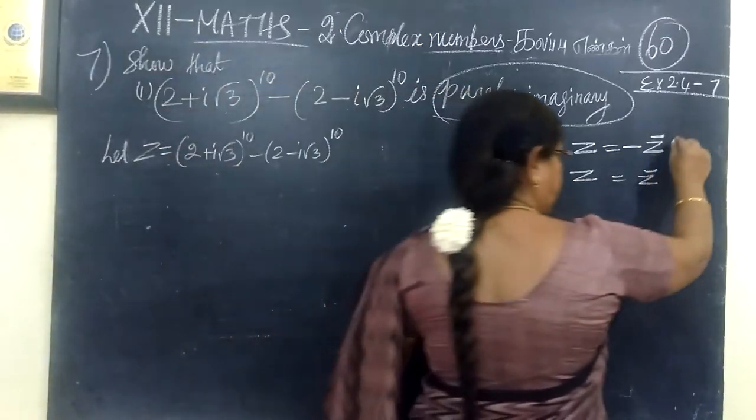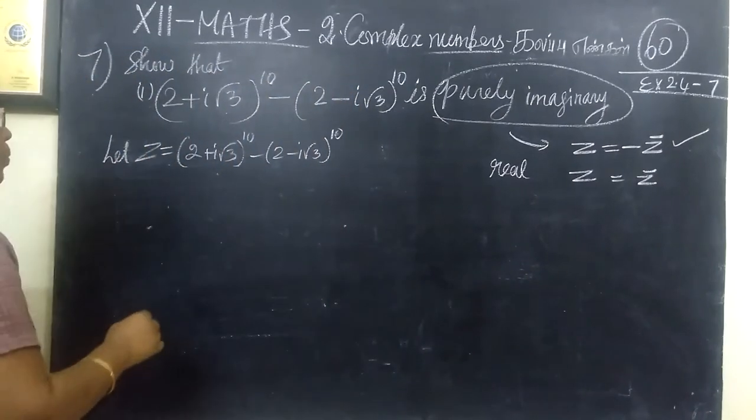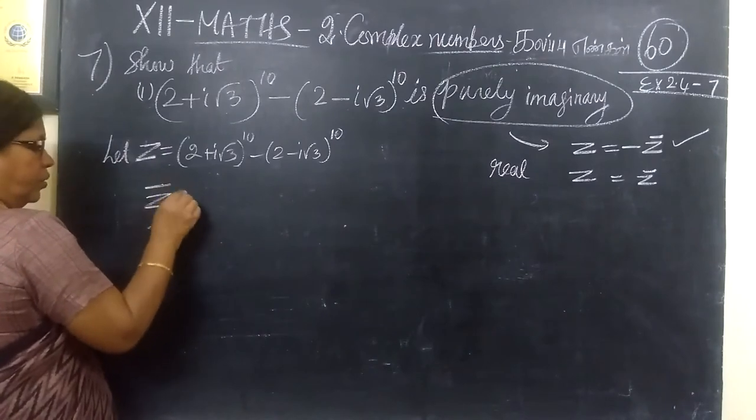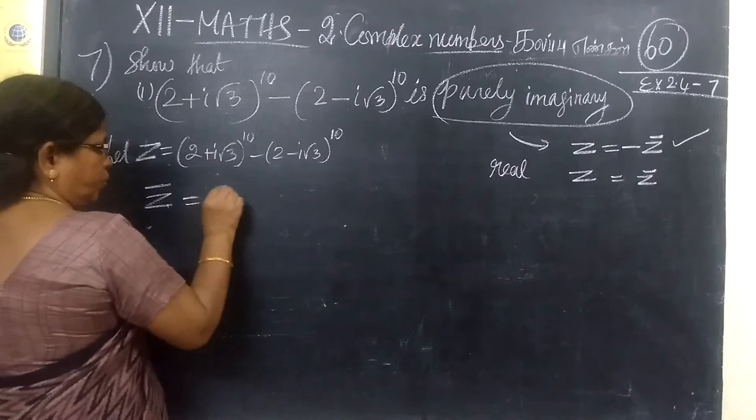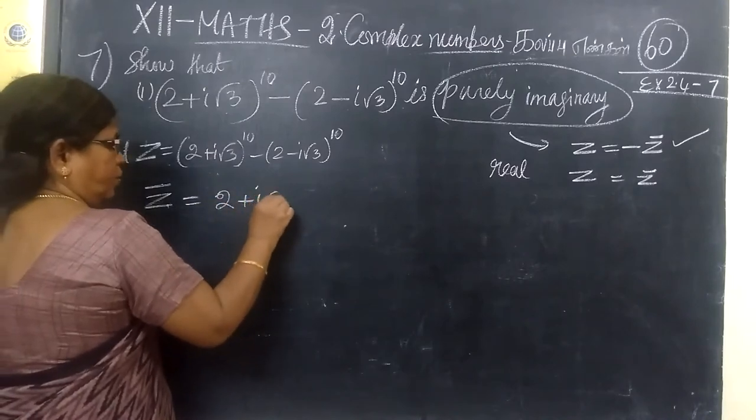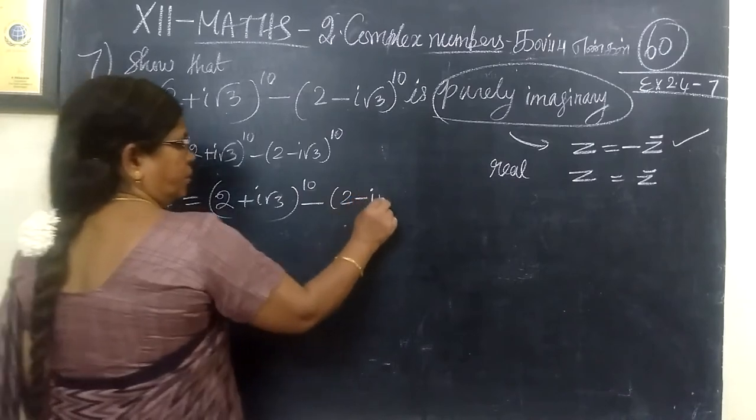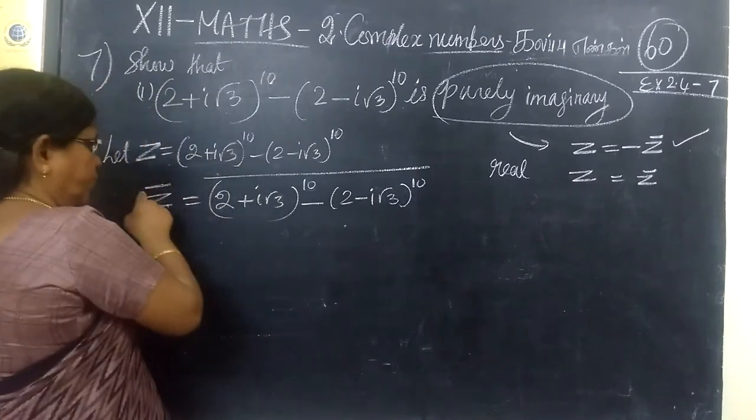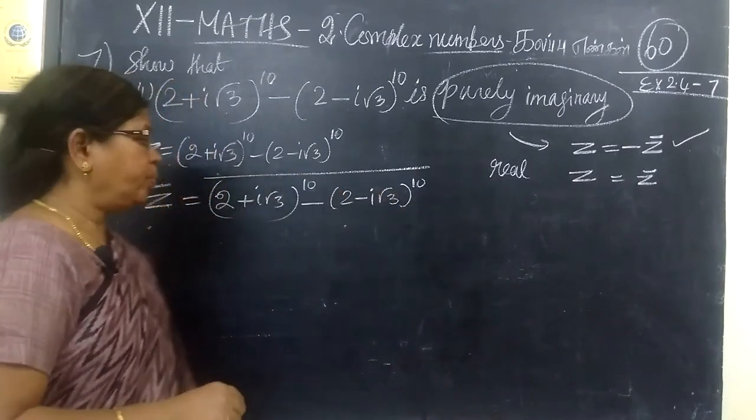So if you find this condition, the sum is over. If we know the condition, this is Z. We know the condition Z bar equal to total bar. So (2 plus i root 3) whole power 10 minus (2 minus i root 3) whole power 10. That is all bar. Z equal to bar. So this is Z, then total all bar.